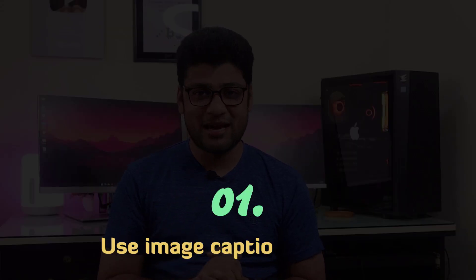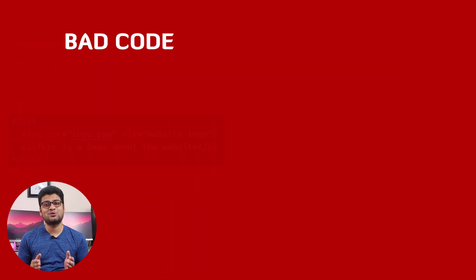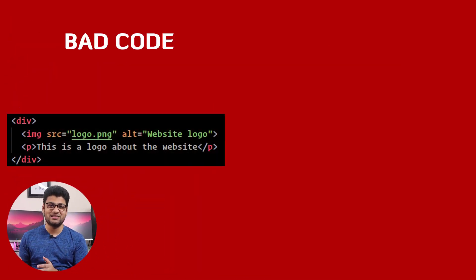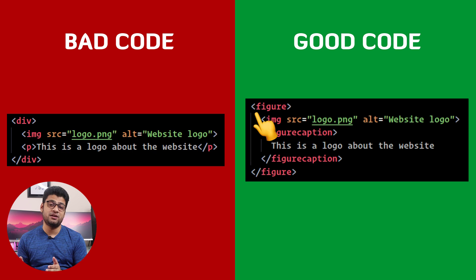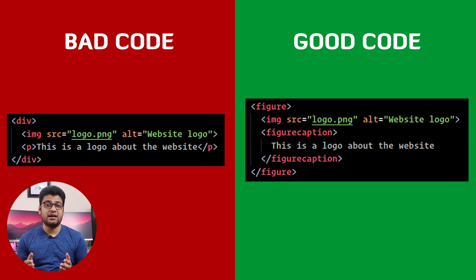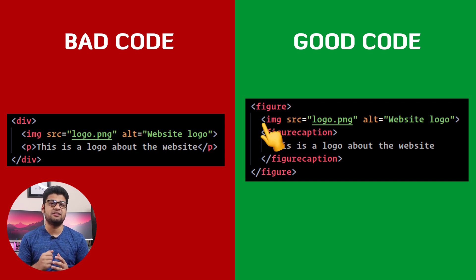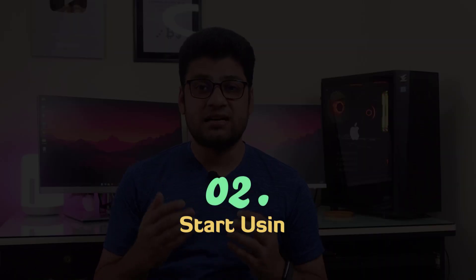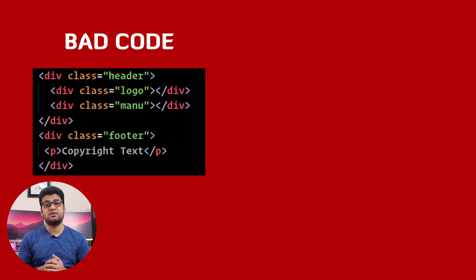Number one: use image captions properly. When beginners want to add an image caption, most of the time they use the p tag. Instead, you can use the figure element. Place your image tag inside the figure tag, and your caption should be inside the figcaption tag.